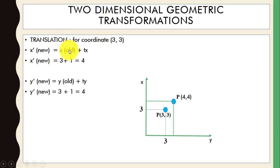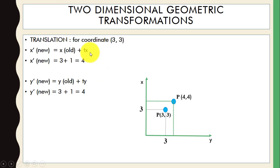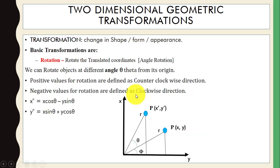Old position plus translation distance: add 3 plus 1 — the old position is 3 and the distance is 1 — so we get the new coordinate, which is point (4, 4).